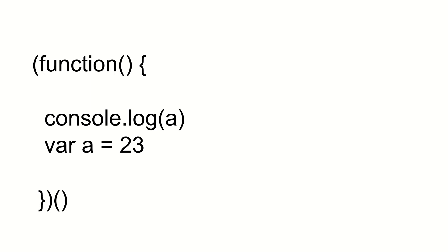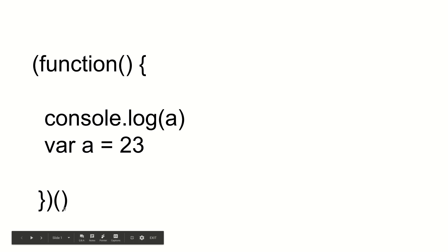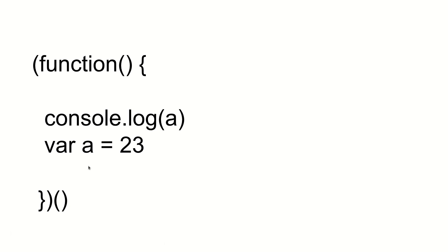Here is an immediately invoked function expression, which means that we have defined a function and then immediately executed it. We are going to study how JavaScript will actually parse and then execute this, and that will give you a fair clarity about how function hoisting and variable hoisting actually work.